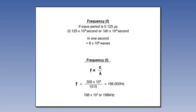Let's try one more, but this time we know the wavelength, 1,515 meters, and we want to find the frequency of the wave. Transpose the formula so that frequency is the speed of radio wave divided by the wavelength, which is 198,000 hertz, or 198 times 10 to the power of 3, which we call 198 kilohertz.